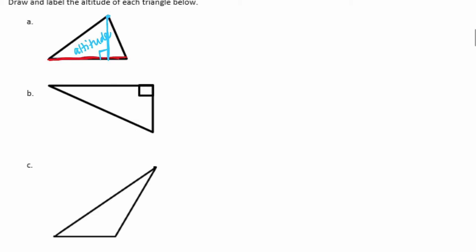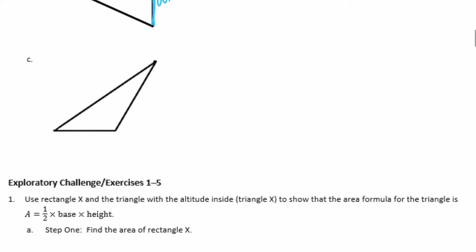For triangle B, I need a line that's perpendicular to the base. There already is a line that's perpendicular to the base because it's a right triangle, so we don't even need to draw one there. For the last one, let's use this as the base. I'm going to draw a line perpendicular to that — I'll extend the base and then draw a line right there. This would be called the altitude. Even though it's not technically connected to the base, it still is perpendicular to it if you extended your imaginary line.